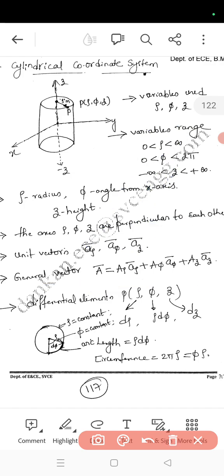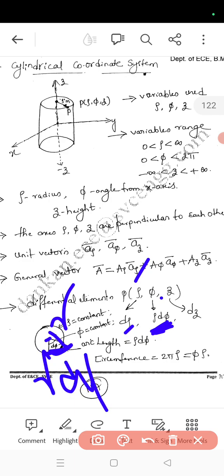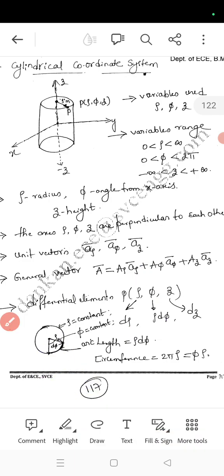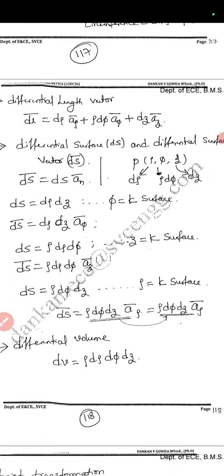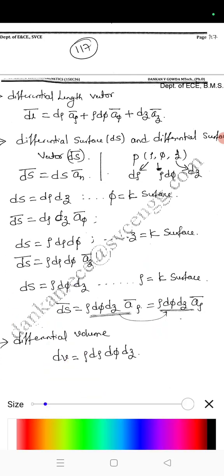The general vector can be written as A = A_r·a_r + A_phi·a_phi + A_z·a_z. For the differential elements, it is very important to write: for r it is dr, for phi it is r·dφ — because phi is the angle and the arc length is r·dφ — and for z it is dz.